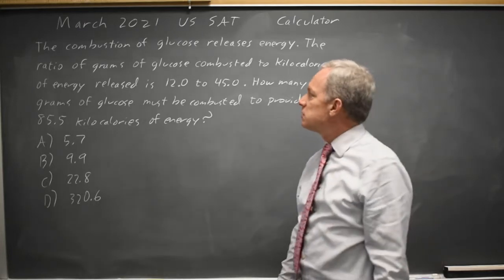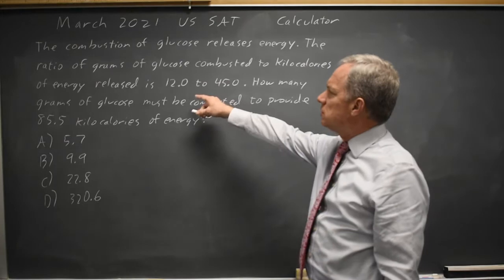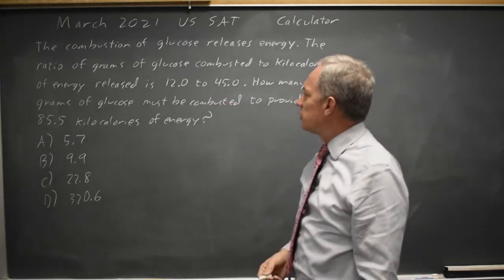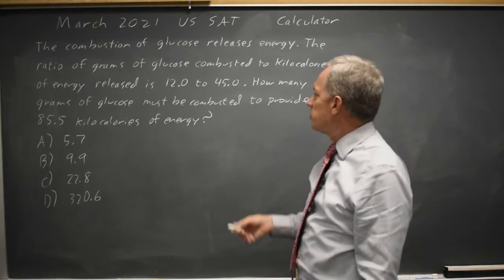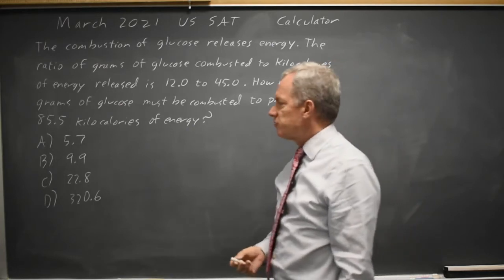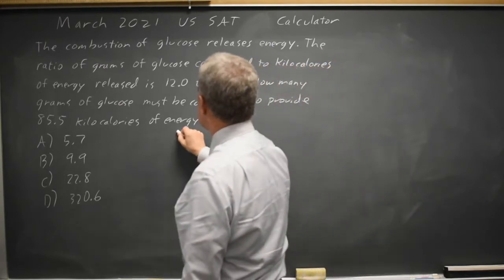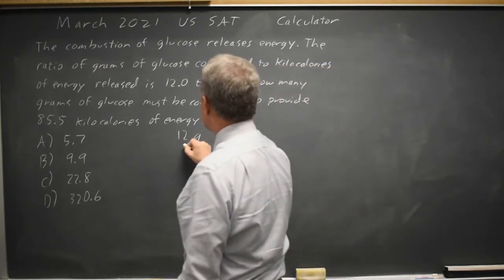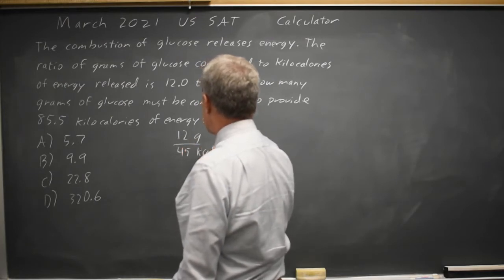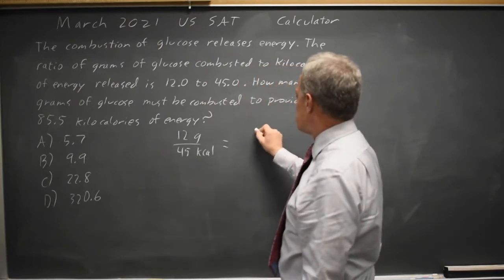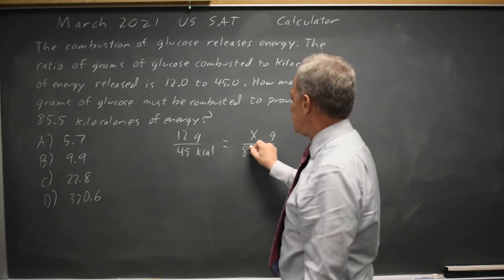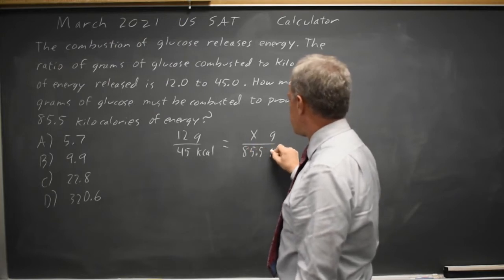College Board gives us a ratio: 12 grams of glucose corresponds to 45 kilocalories of energy, and they ask how many grams of glucose for 85.5 kilocalories of energy. So we can set that up as 12 grams over 45 kilocalories equals, they're asking how many grams, so I'm going to call that X grams over 85.5 kilocalories.